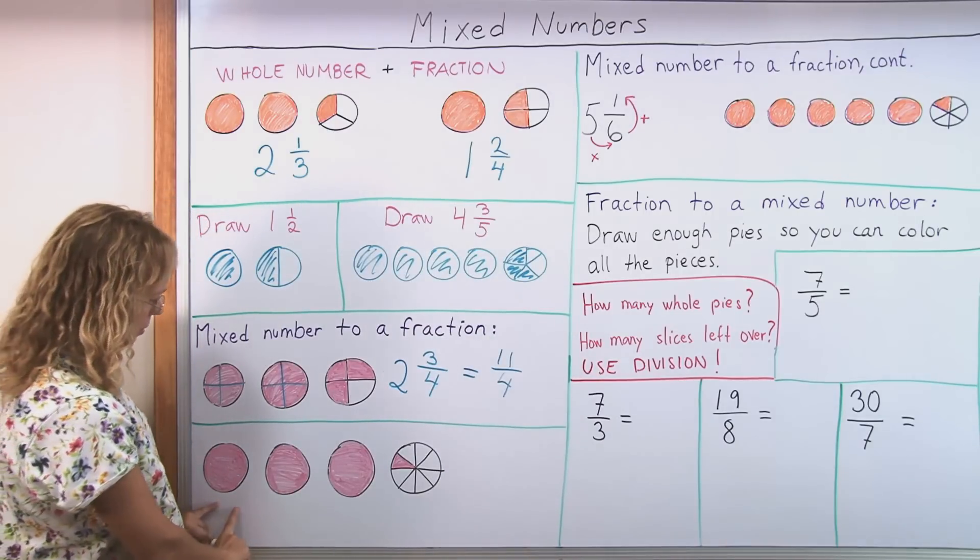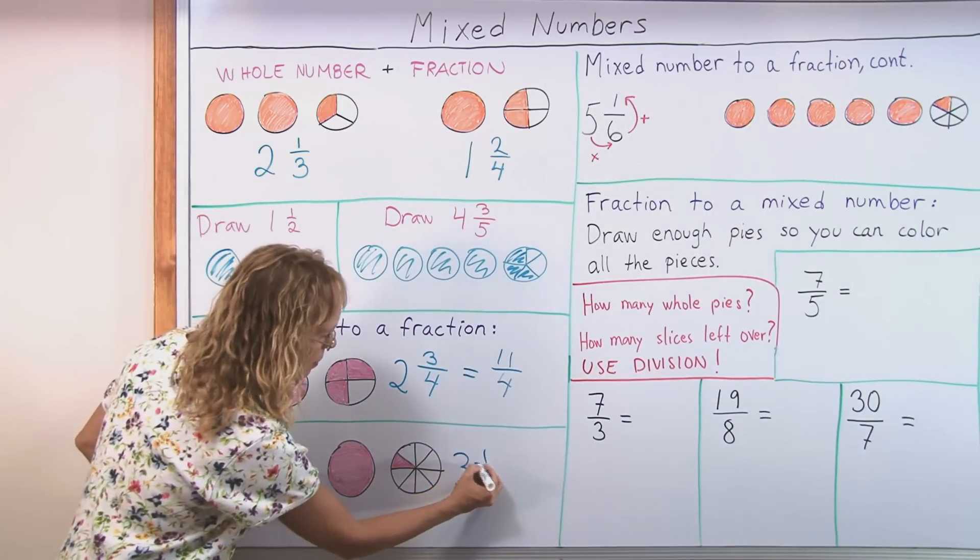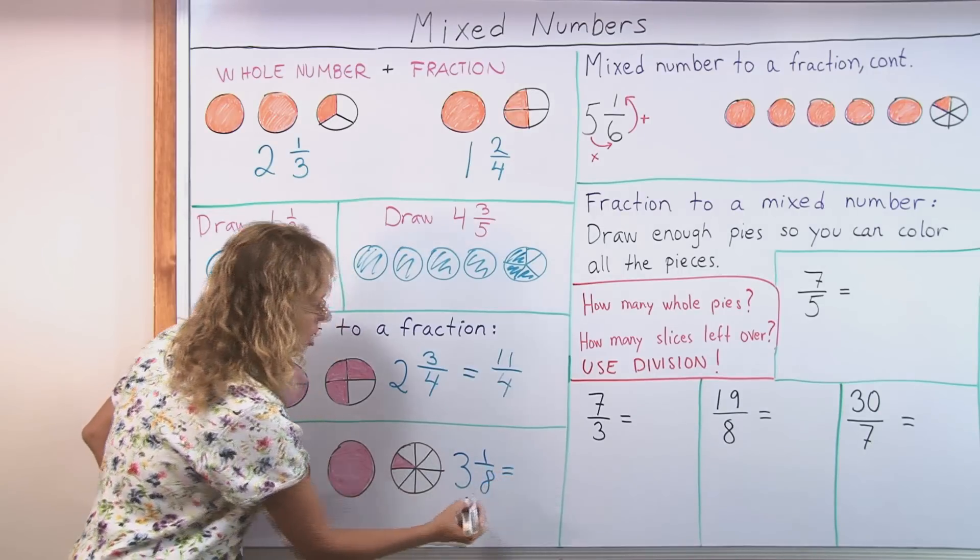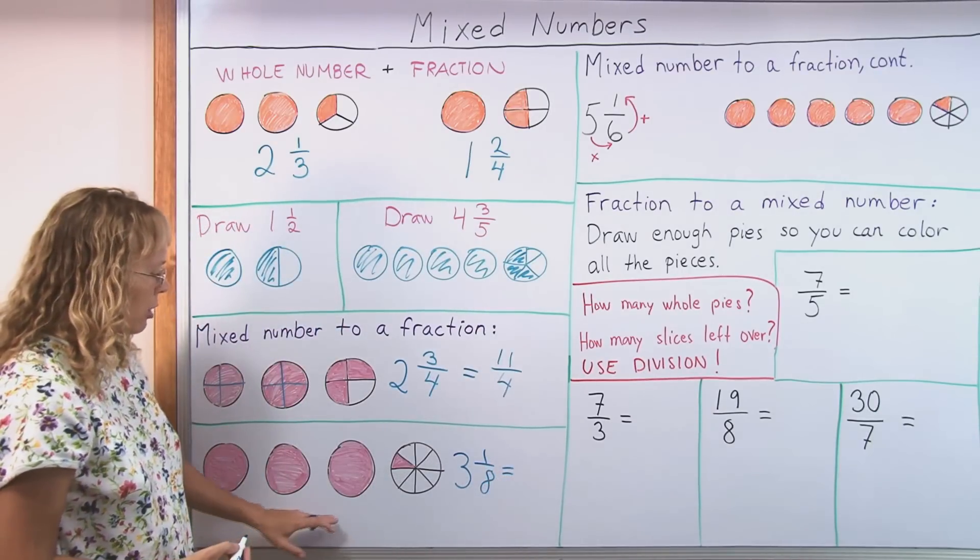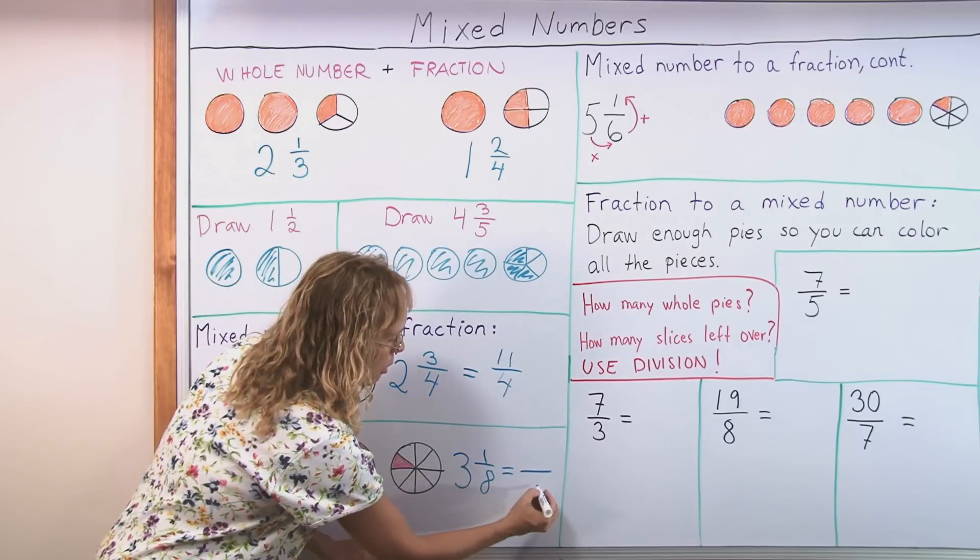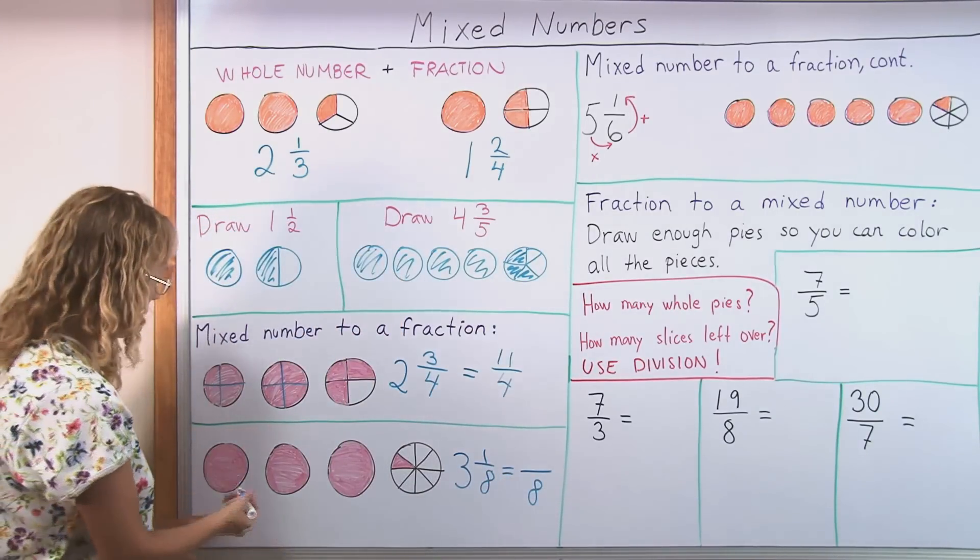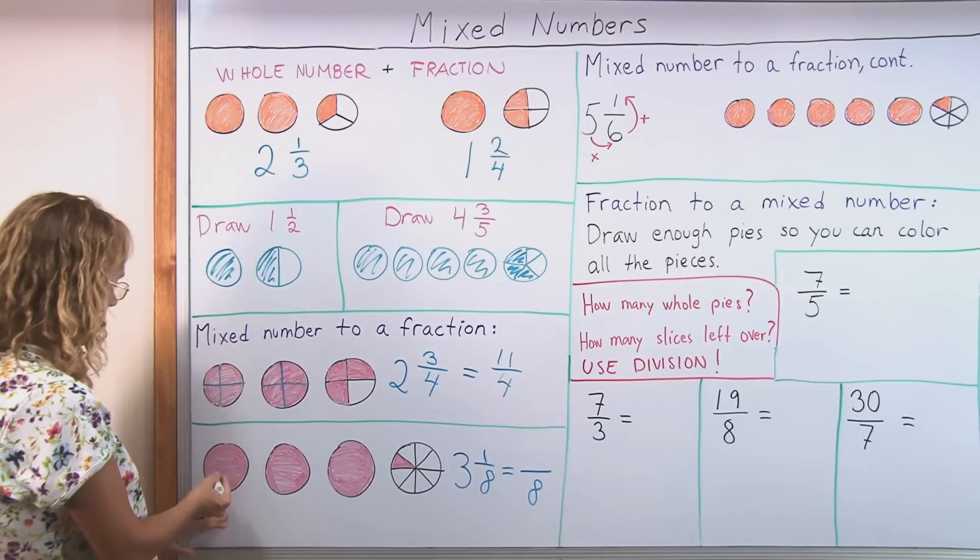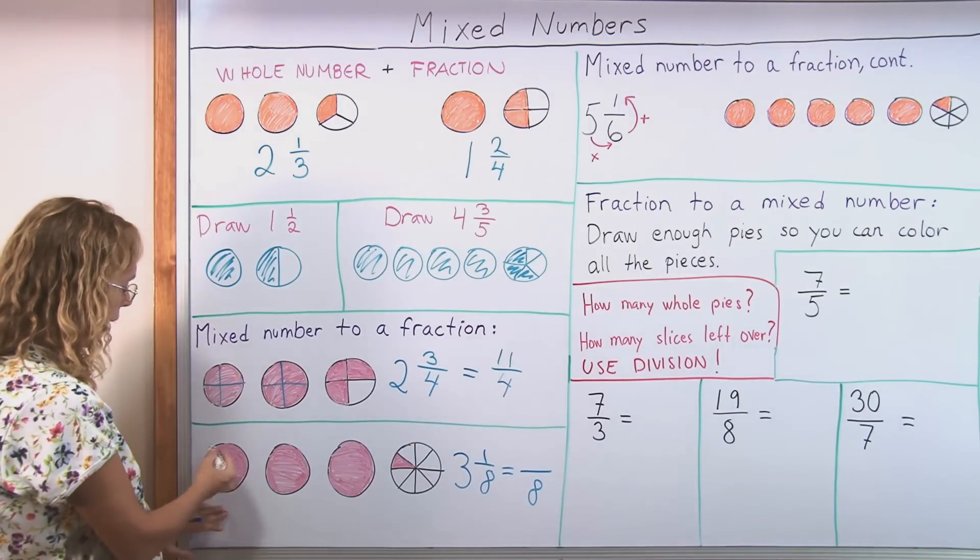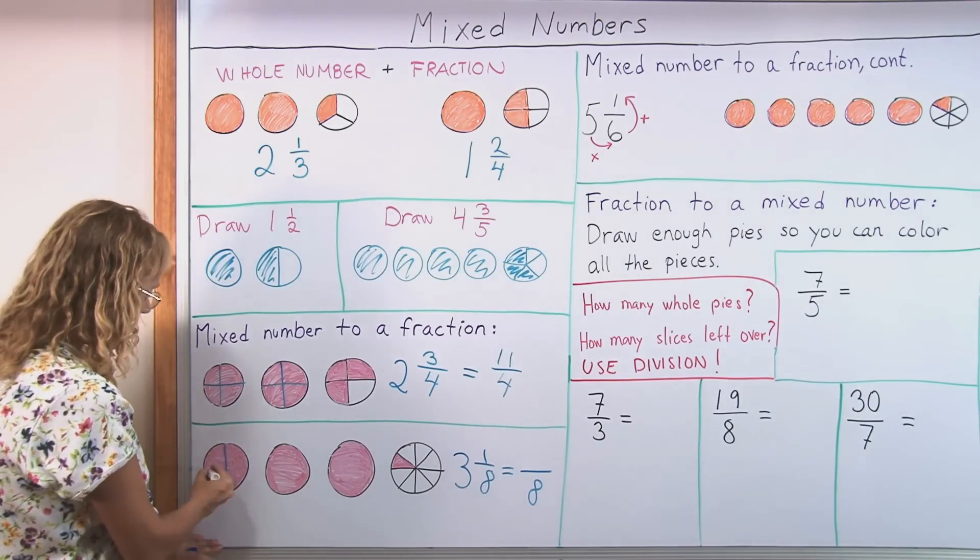Over here our mixed number is three and one eighth. When we change it into a fraction we need to divide everything into eighths because this one is divided into eighths. It will be so many eighths. The problem is how many eighths are there going to be? So here would be eight eighths, right? If I divide this into eight, I'll get eight eighths.